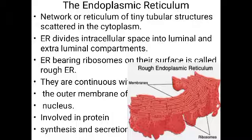The endoplasmic reticulum can be seen as tiny tubular structures scattered in the cytoplasm. When we see the cell under the electron microscope, we can see a network of tiny tubular structures, named the endoplasmic reticulum. 'Reticulum' means a network-like structure. This endoplasmic reticulum divides the intracellular space into two distinct compartments.